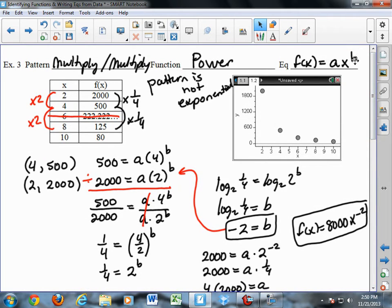A power function has kind of an unusual pattern in that, first of all, you notice it's not exponential. It kind of looks like it's going to be, but I do 2,000 divided by 4 and I get 500, but 500 divided by 4 doesn't give me this 222, which I just crossed out, and I'll explain that in a minute. But if I divide 500 by 4 again, I get 125, which is down here.